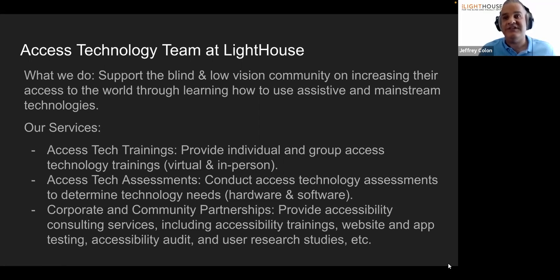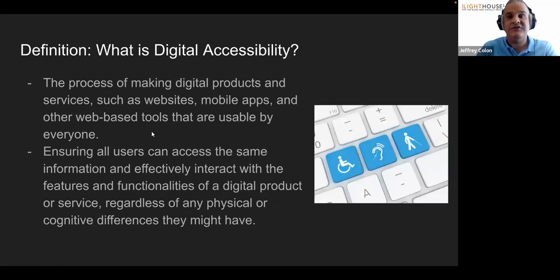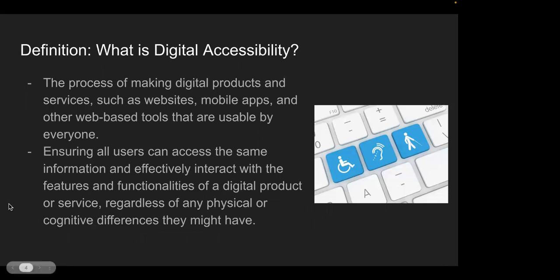This is an overview of the themes we cover in the access technology department at the Lighthouse. To level set, we wanted to define how we view digital accessibility. Digital accessibility is the process of making digital products and services — such as websites, mobile apps, and other web-based tools — available to everyone, ensuring all users can access and use these tools effectively despite any physical or cognitive differences they may have.